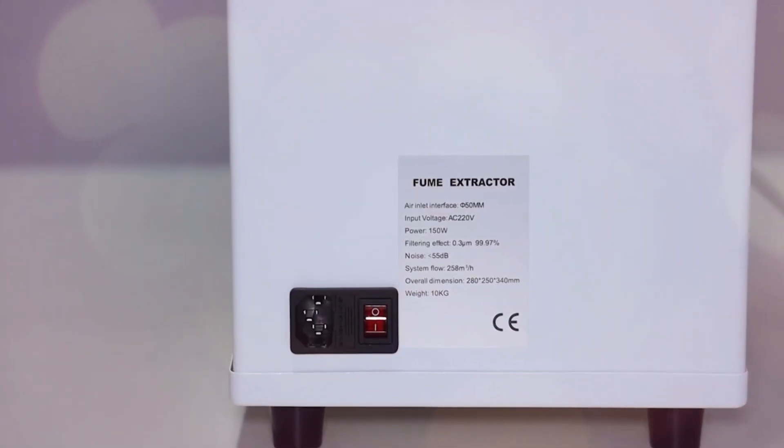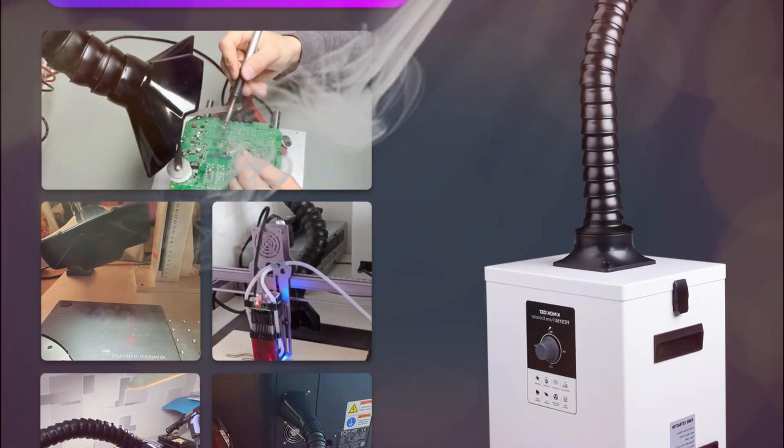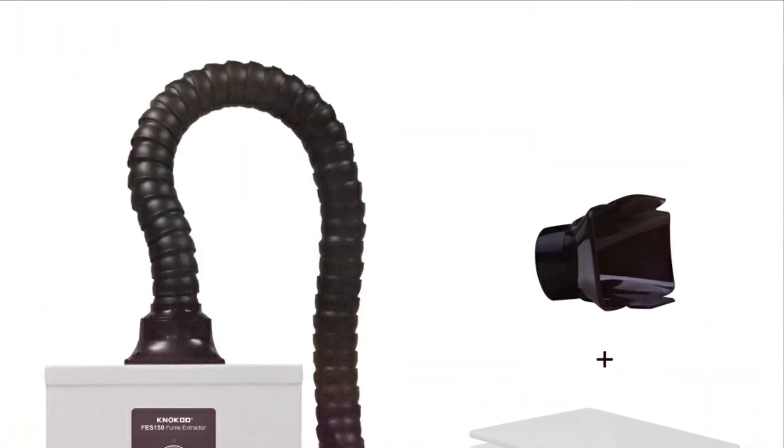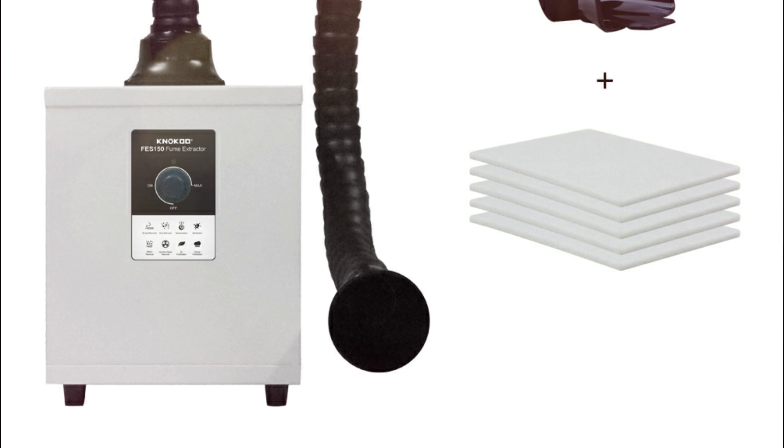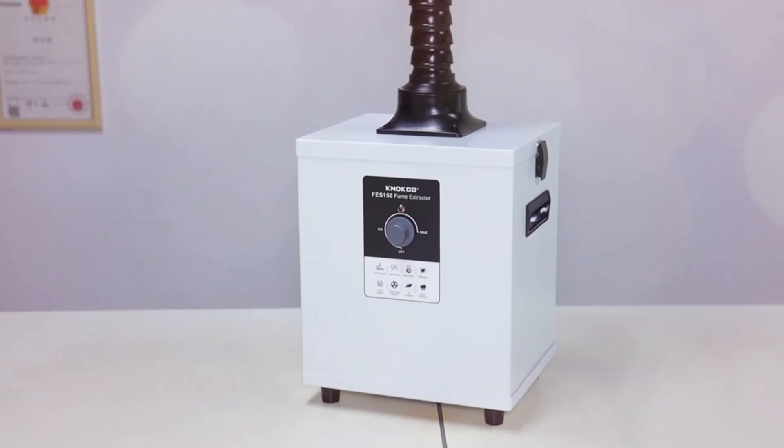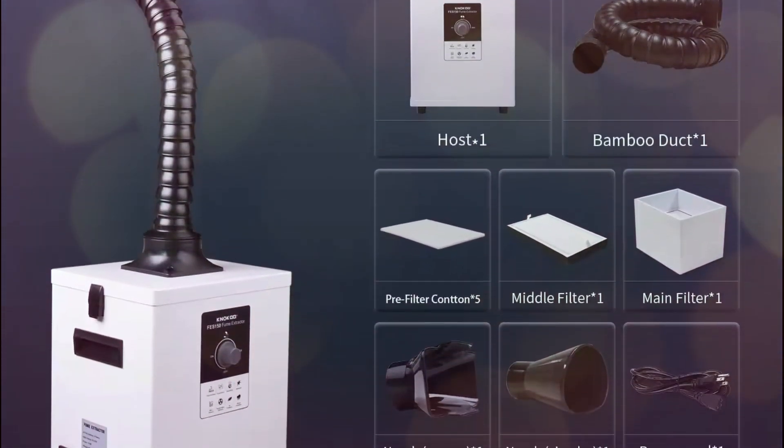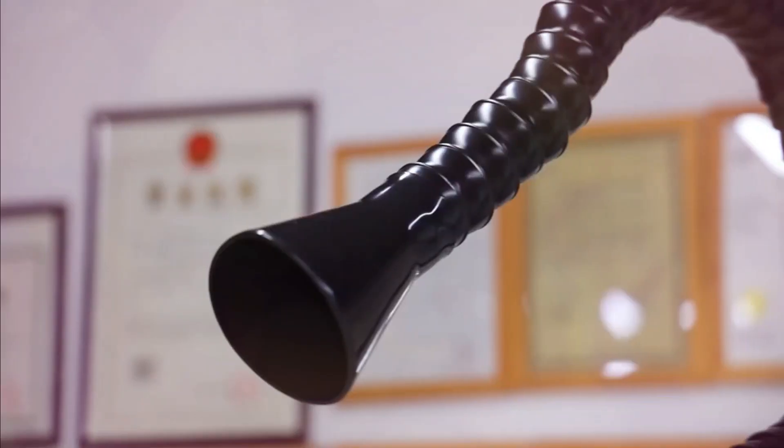The three-stage filtration system uses a HEPA filter, activated carbon layer, and primary filter cotton to achieve 99.97% purification, effectively removing fumes, dust, and harmful gases. With 150W of suction power and a low noise level below 55 decibels, this extractor is ideal for soldering, laser cutting, beauty salons, and more, ensuring clean air in any workspace.